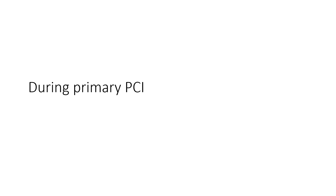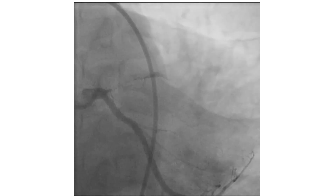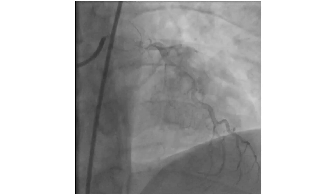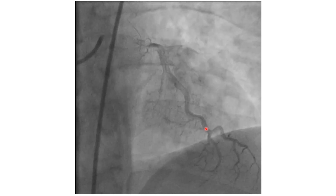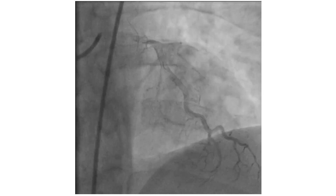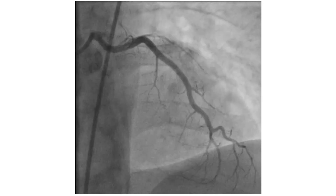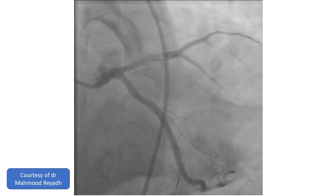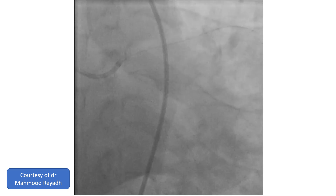This becomes particularly important when doing primary PCI because there will be no flow, whether antegrade or retrograde. In this case of anterior MI with total occlusion of the LAD, a large thrombus burden is found. There is no antegrade nor retrograde flow. We can see the circumflex, and the course of the LAD should be here, but there is no vessel in this view. The operator passed a wire and did balloon dilation, and now the course of the vessel is shown.